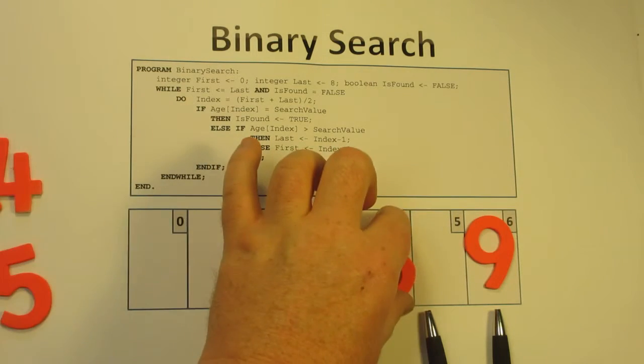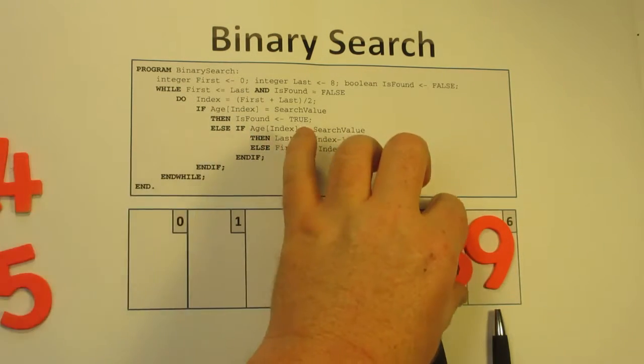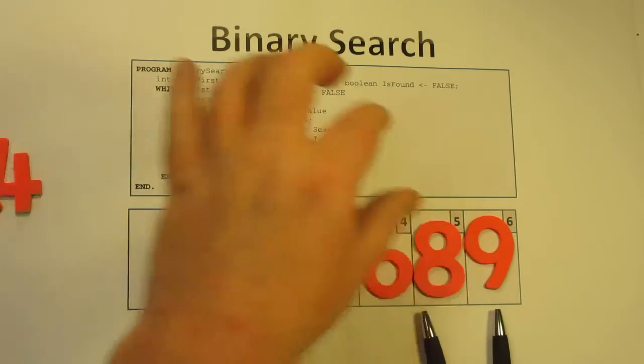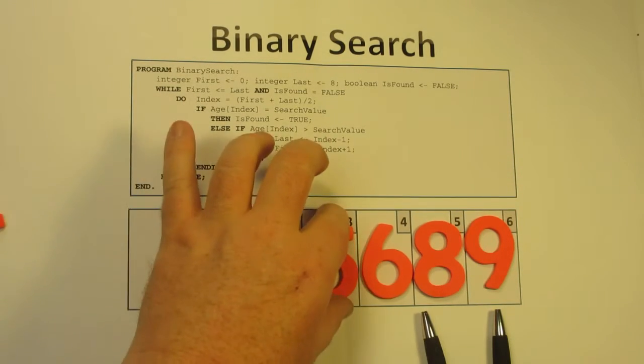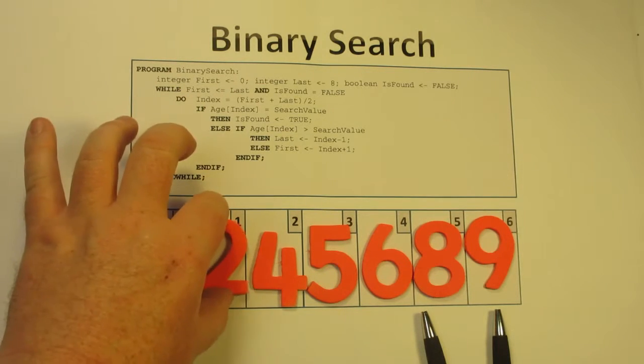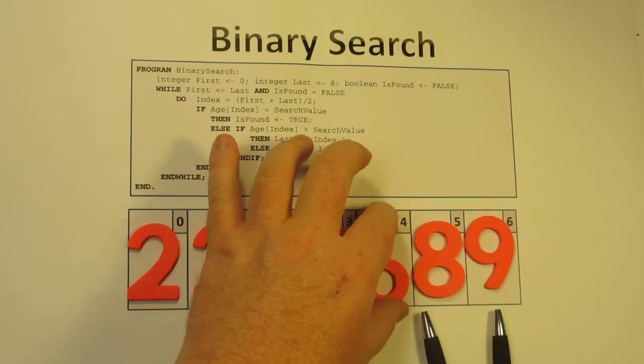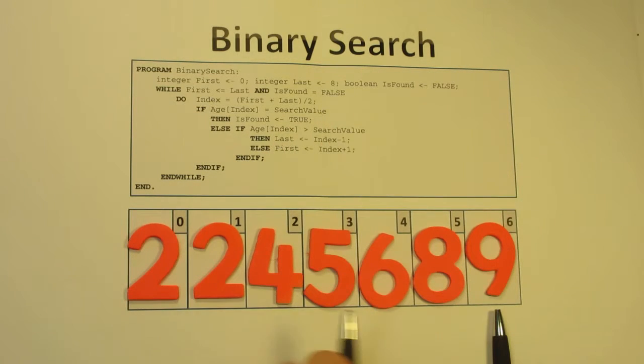This is a much faster way of doing the search than sequential search. With sequential search, if there's a hundred values we have to search all of the hundred values. With binary search and a hundred values, we should be able to find it in five or six goes at most. But it does require that the data is sorted in the first place, unlike a sequential search.